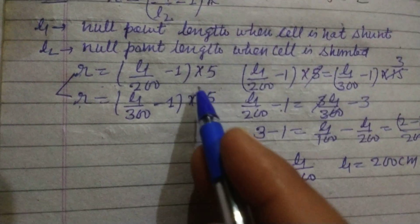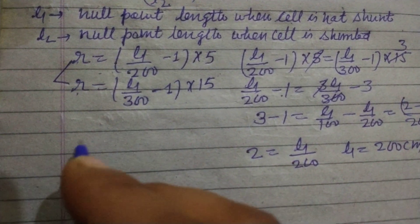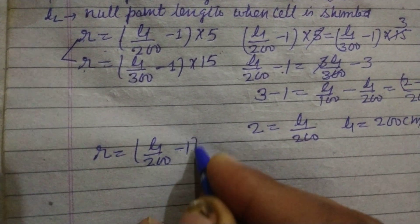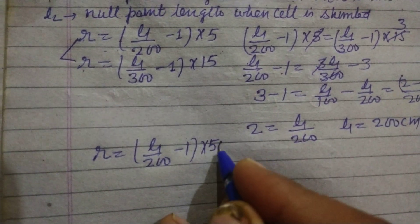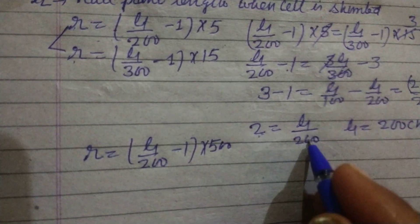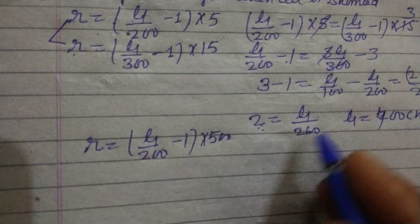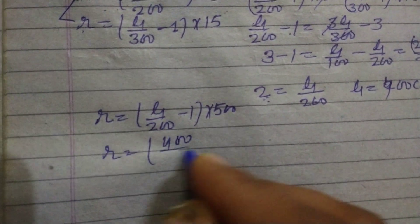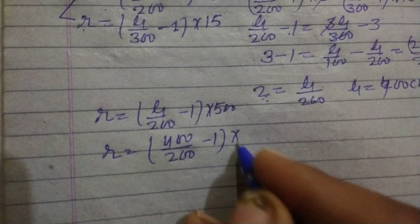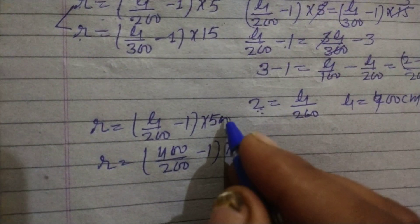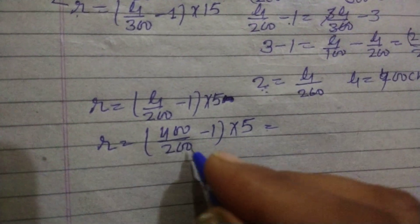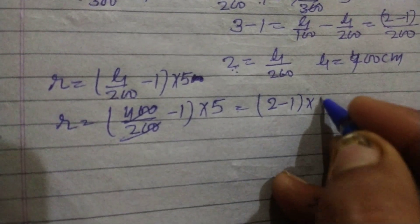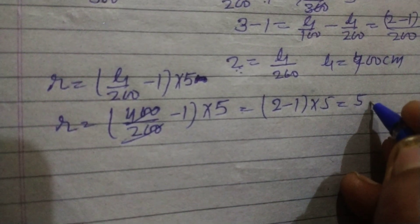Now putting this value in: L1/200 - 1 times 5. So 400 divided by 200 is 2, times (2 - 1) times 5, this is 5Ω.